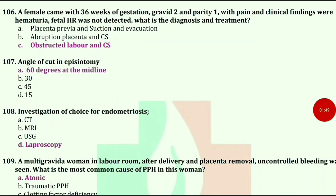A female came with 36 weeks of gestation, gravida 2, para 1, with pain. Clinical findings were hematuria and fetal heart rate not detected. What is the diagnosis and treatment? The answer is obstructed labour and C-section.